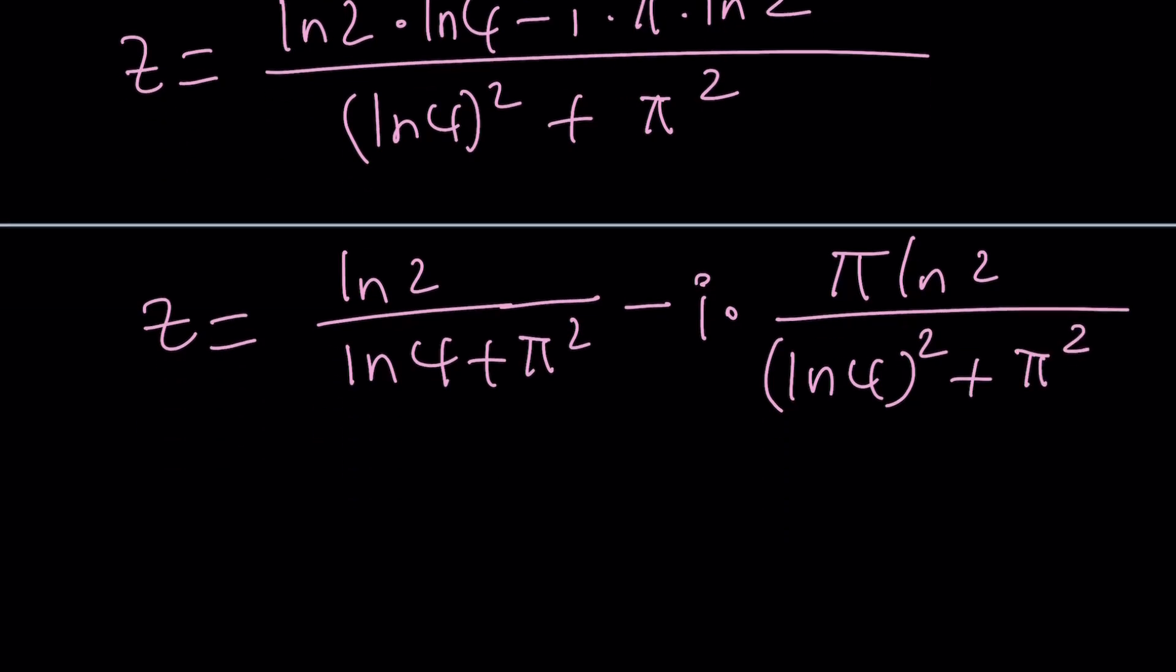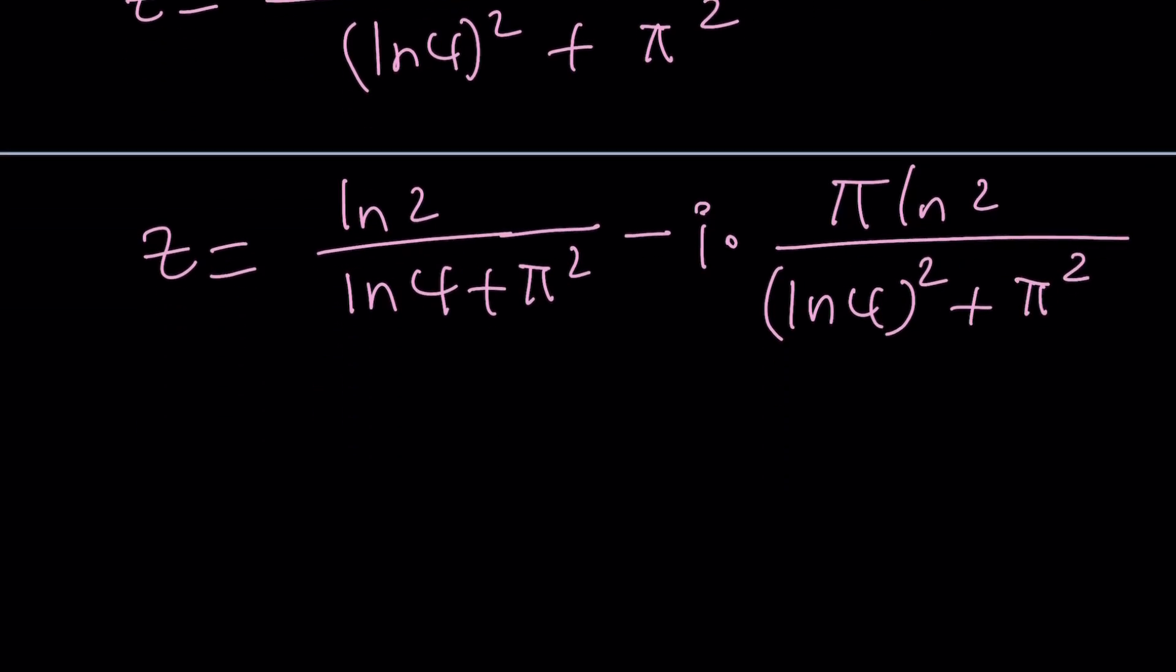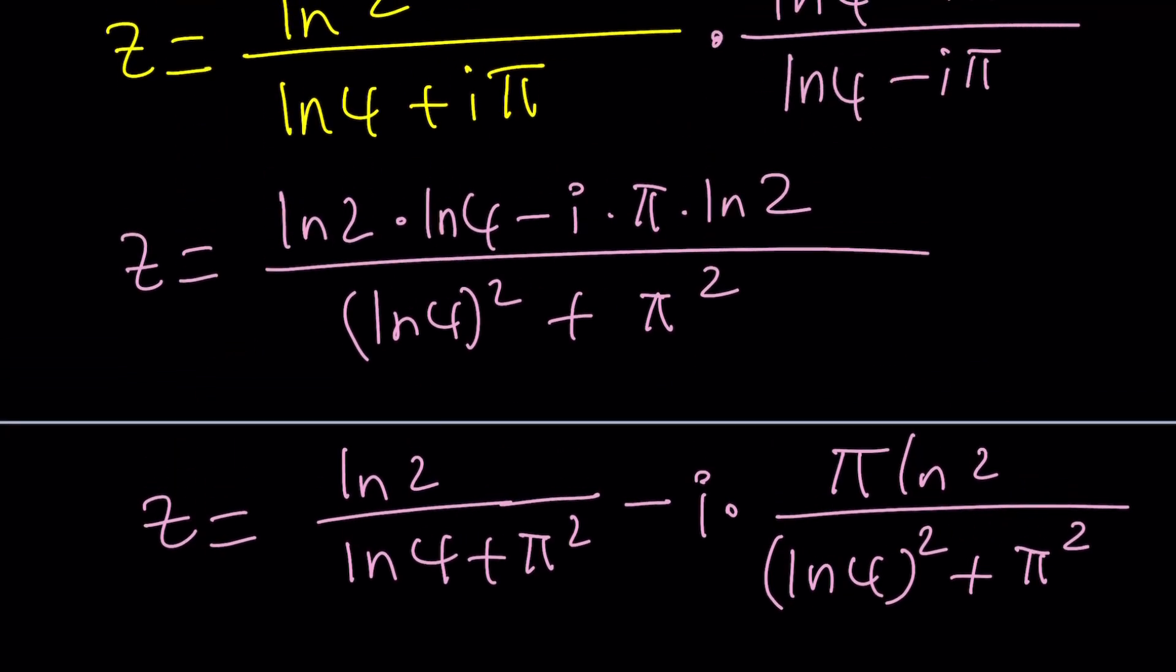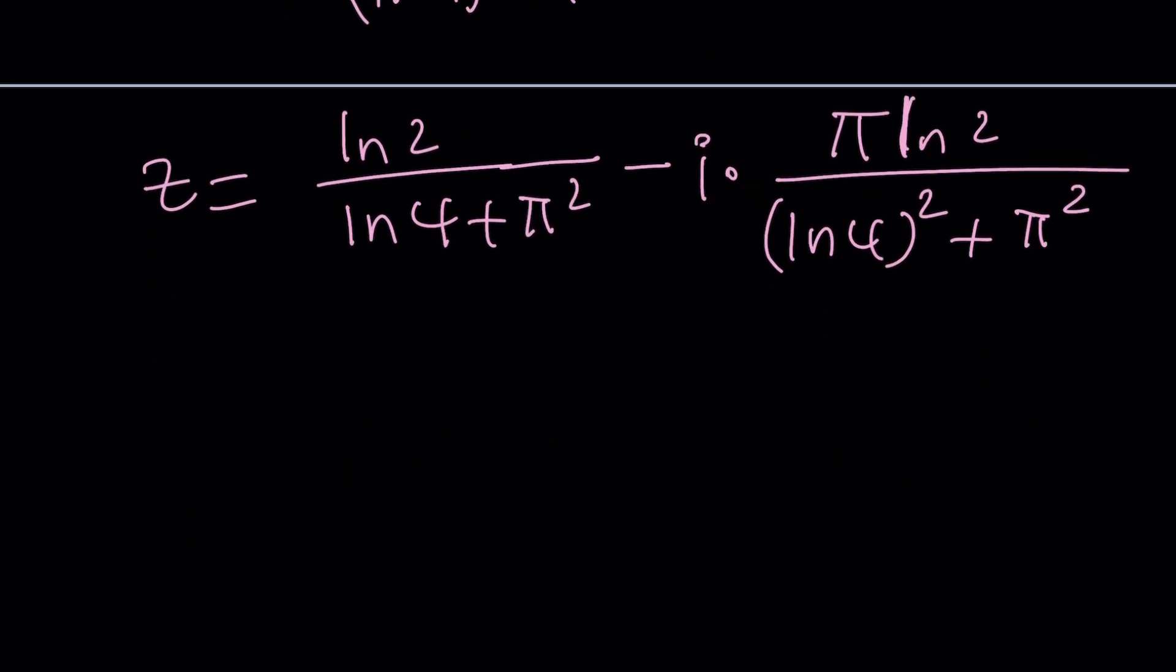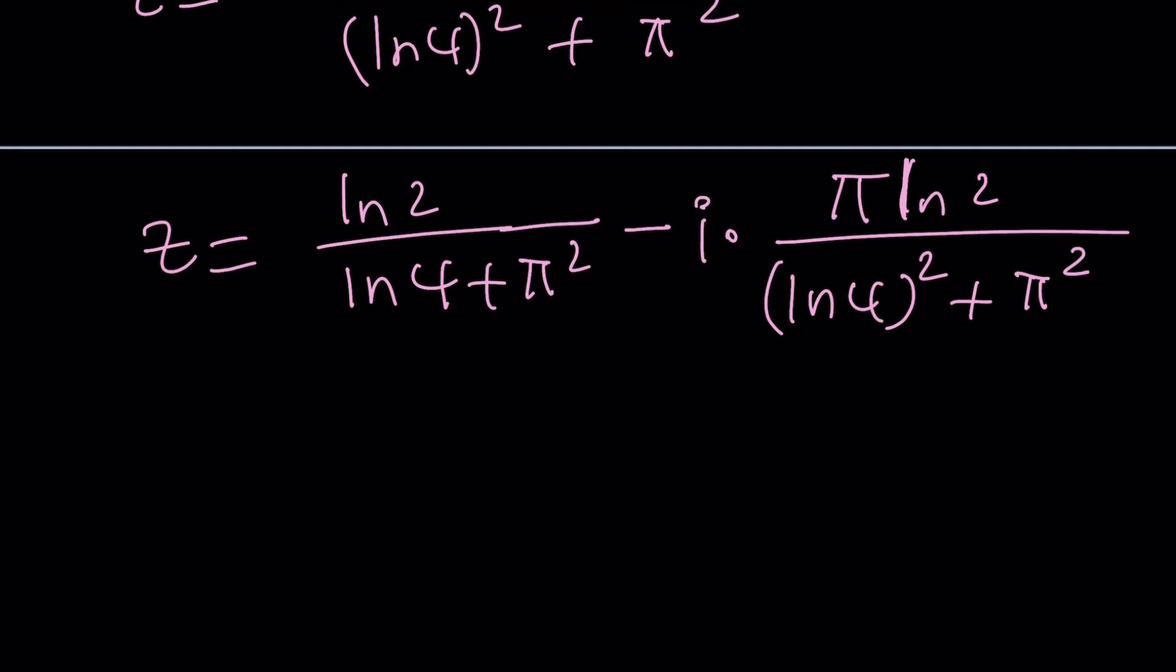And if you really wanted to separate it, like split it into pieces, you're going to get ln 2 ln 4 over ln 4 squared plus pi squared minus i times pi ln 2 divided by ln 4 squared plus pi squared. So, notice that even the real part of z is not one half. It's actually kind of one half.